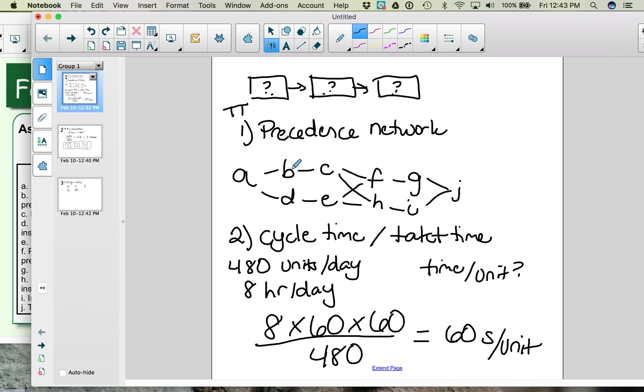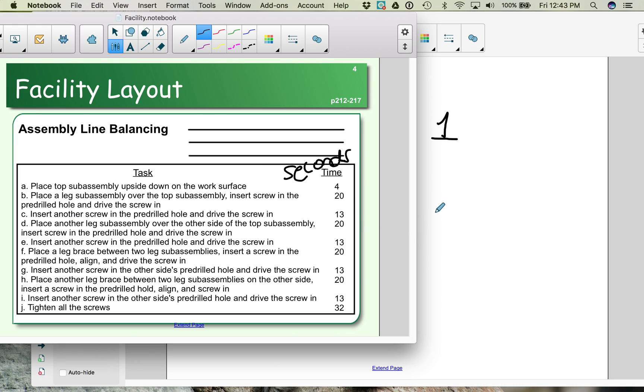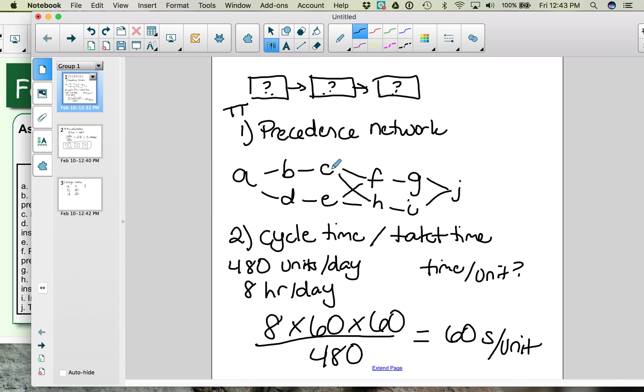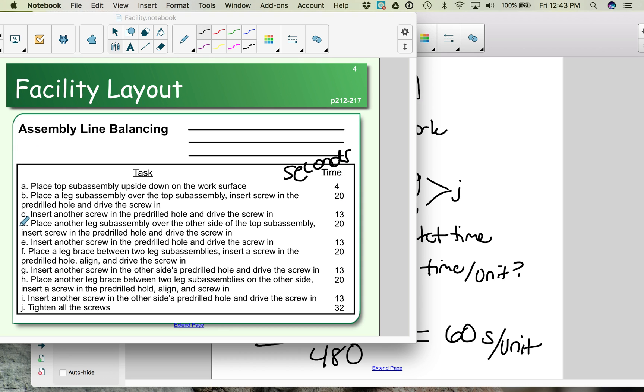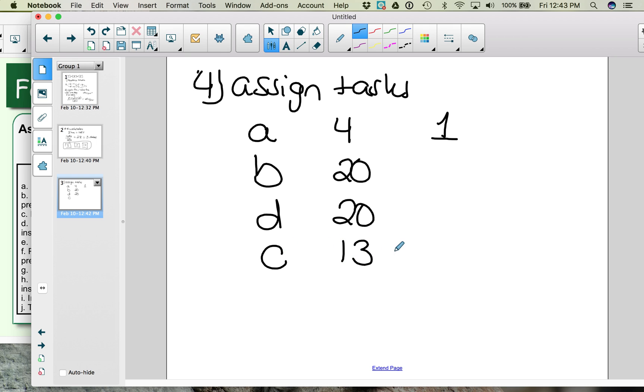We go back to our process flow diagram, and we're looking at C or D. Well, D has more followers, more activities that come after it, so we choose D, not C. So let's add activity D. And activity D takes 20 seconds. So now we've used up 44 of the 60 seconds at workstation 1. And we go back to our precedence network, and we would either add C or E. It doesn't matter which one. Let's look at their times. C takes 13 seconds, and E takes 13 seconds. So we just choose one. Let's choose C. So now we have 57 seconds used up. And since there is no more room to add another activity, we're going to have three seconds of idle time.